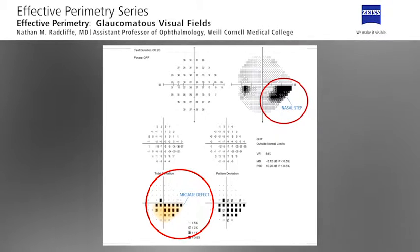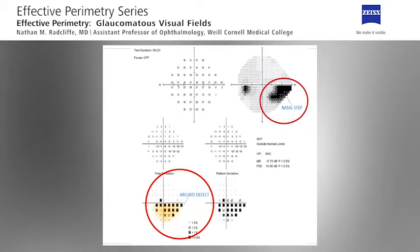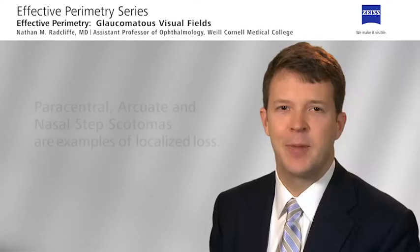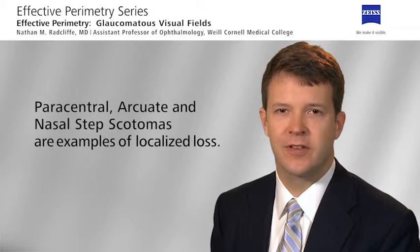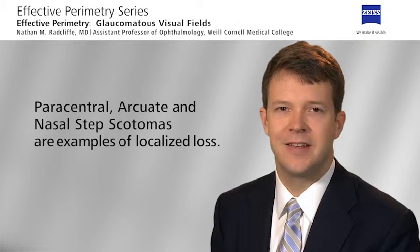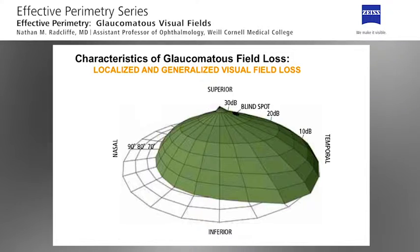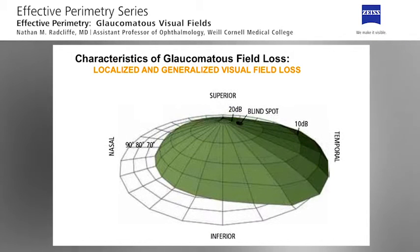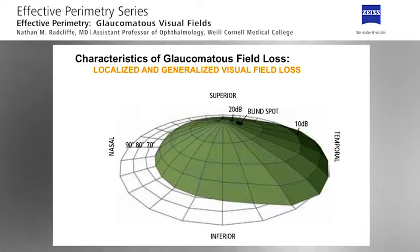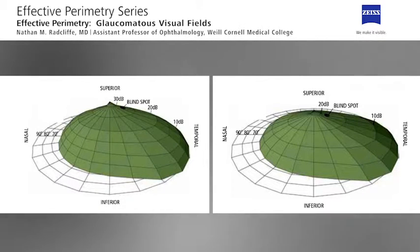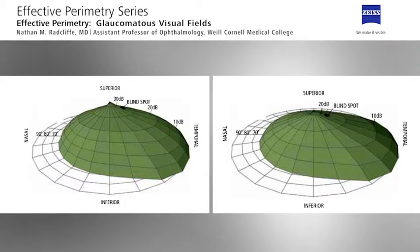This particular test is also an example of a field with a mixture of defects. Here in the total deviation plot you can see an arcuate defect as well. Paracentral and arcuate scotomas and nasal defects are examples of localized field loss, that is defects that have shape. Here is an example of a normal hill of vision. Generalized visual field loss, in contrast, is a homogeneous loss of sensitivity across the whole visual field resulting in a depression of the hill of vision without any significant change of its shape. Homogeneous visual field loss in the absence of localized loss is not common in glaucoma and in any case is not specific to this disease.